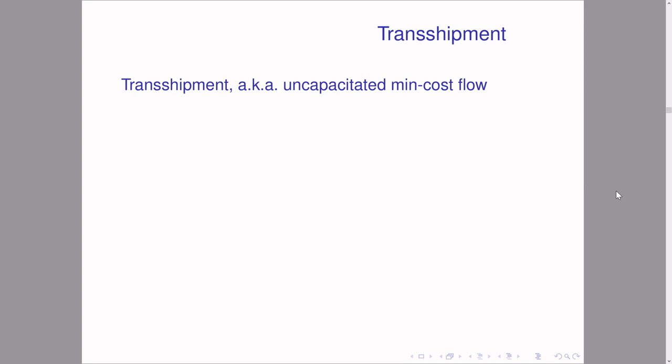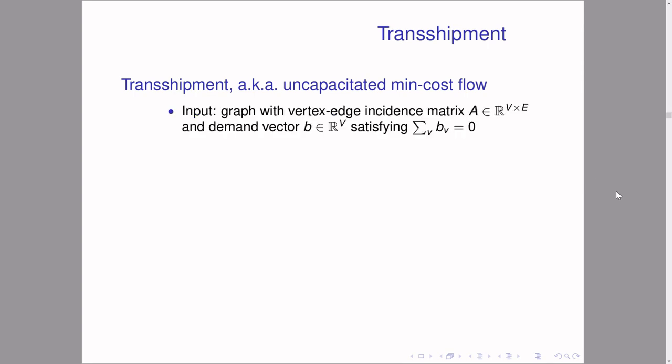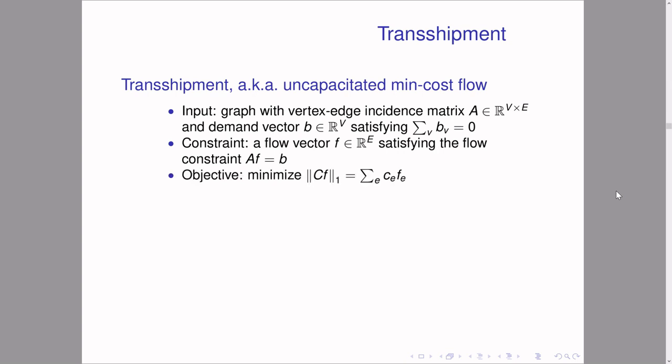Let's begin with the transshipment problem, otherwise known as uncapacitated min-cost flow. As input we are given a graph with its vertex-edge incidence matrix capturing the graph structure, and some demand vector whose demands sum to zero — think of this as a flow demand vector. The flow constraint is the standard one: flow is a vector on edges satisfying the flow constraint. Unlike max flow where we minimize maximum congestion, here we minimize the L1 norm weighted by the cost matrix C (a diagonal matrix with edge costs on the diagonal). This is essentially the transshipment cost of the flow — an L1 version of max flow.